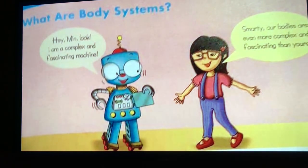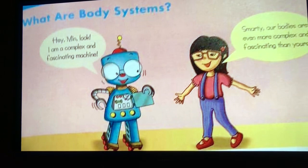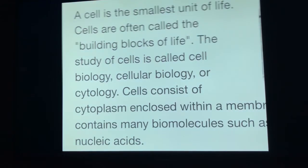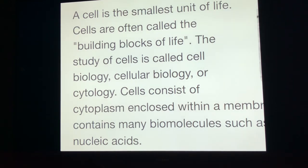Before understanding this chapter, you're going to go to the book and you'll have an image about body systems, showing two people talking to each other. Before moving to the topic, we need to understand one thing: what is a cell? A cell is the smallest unit of life. Cells are often called the building blocks of life. Everything in the human body is comprised of cells, and when they group themselves according to size, they make a tissue. I'm going to show a video so you'll have a clear image regarding the cell.